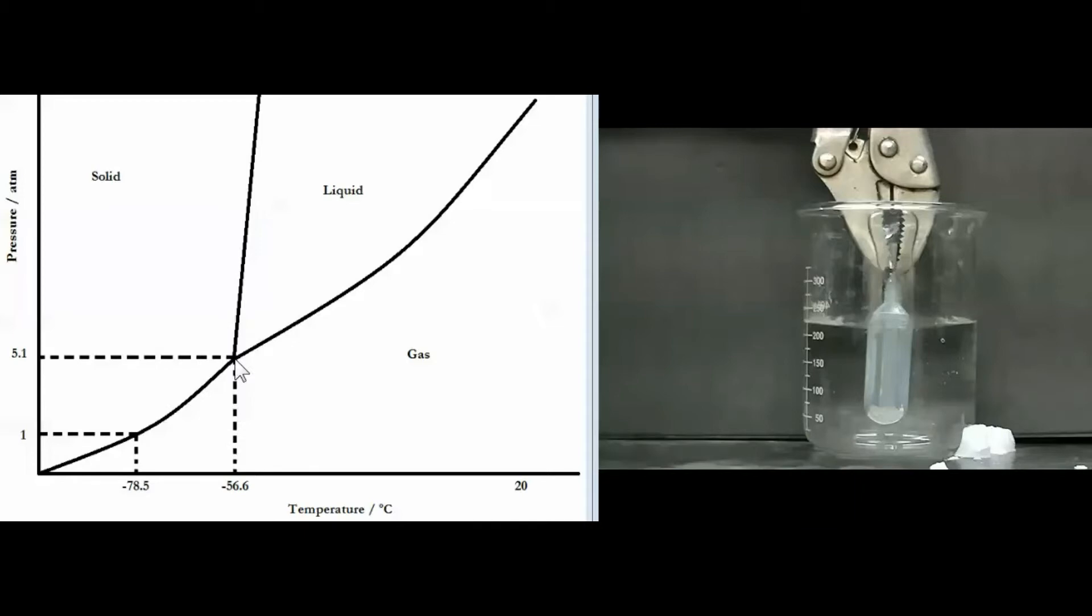Now once all of that solid melts and all you have is liquid and gas, the carbon dioxide is going to move along this liquid gas equilibrium line as it warms and the pressure will continue to build and that's why the pipette fails.